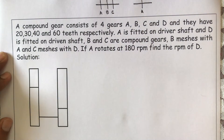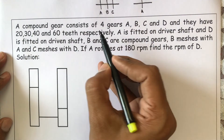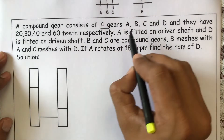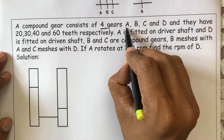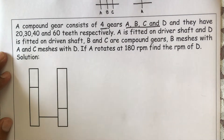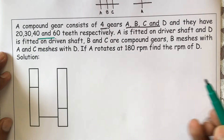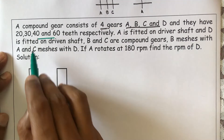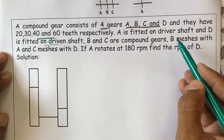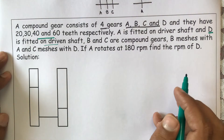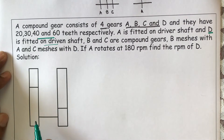Now let us read the statement carefully. A compound gear train consists of four gears: A, B, C, and D. These four gears have 20, 30, 40, and 60 teeth respectively. A is fitted on the driver shaft and D is fitted on the driven shaft, meaning A is the driver and D is the driven gear. Accordingly, we need to prepare the diagram.